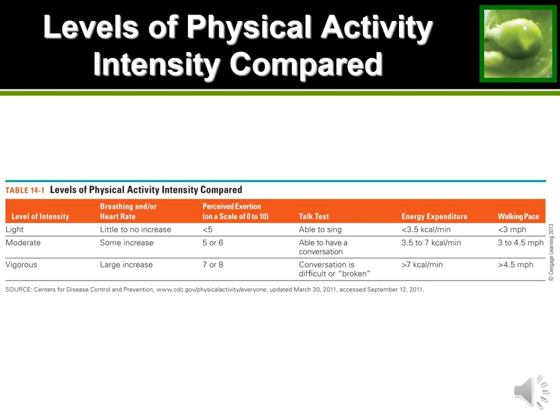Starting off with light intensity: if you try to sing and you're able to sing without your speech being broken up, that's light intensity. If your singing is broken up but when you try to just have a conversation your speech isn't broken up, then that tells you it is moderate intensity.